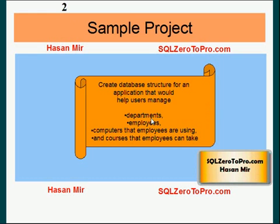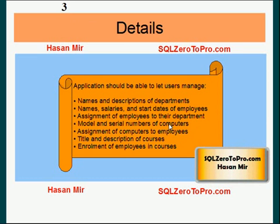Having said that, here are a few more details about the application. Once you're given the project, you went to the business person to ask more details about what this application is supposed to do. You are given this response: the application should be able to let users manage names and descriptions of the department; names, salaries, and start dates of employees; assignment of employees to their department; model and serial numbers of computers; assignments of computers to employees; title and description of courses; and enrollment of employees in certain courses.